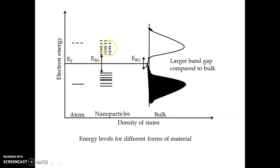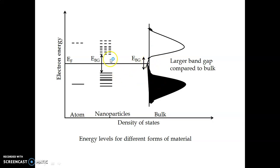A nanoparticle is neither bulk nor an isolated atom — it is an intermediate state made up of a few atoms. So we do not have energy bands as in the bulk case, but rather a set of discrete energy levels. There is a set of valence energy levels and a set of conduction energy levels with a band gap. Compared to bulk, there is an increase in the band gap at the nanoscale.